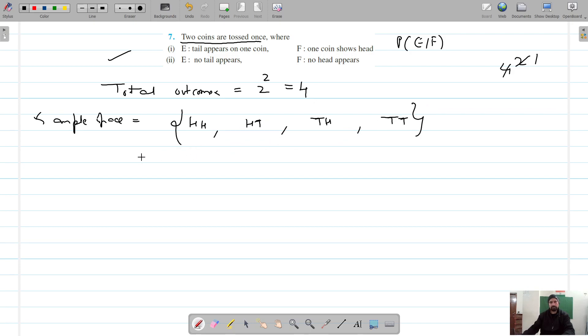For the first part, event E is tail appears on one coin, so tail appears on one coin gives us HT and TH. Our next event is F, where one coin shows head, which should be HT and TH.